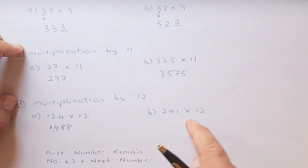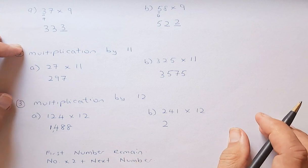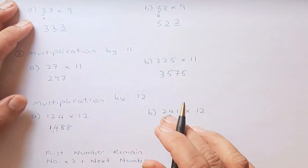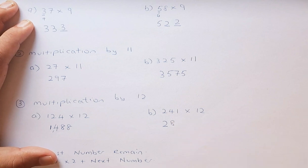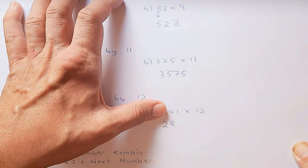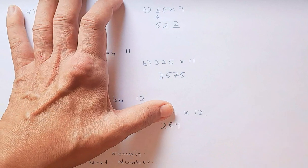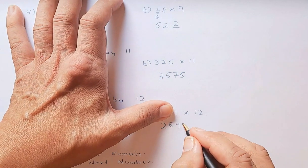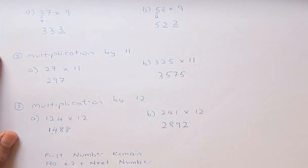Now 241 times 12: the first digit, 2, remains. Then 2 times 2 is 4, plus 4 is 8. Then 4 times 2 is 8, plus 1 is 9. Then 1 times 2 is 2. The answer is 2,892. For multiplying by 13, the method is the same — instead of multiplying each digit by 2, you multiply by 3 and add the next digit.